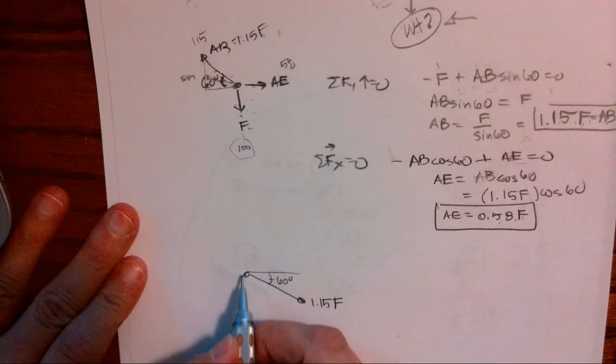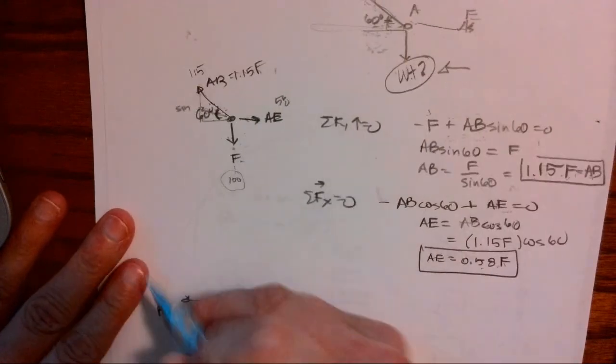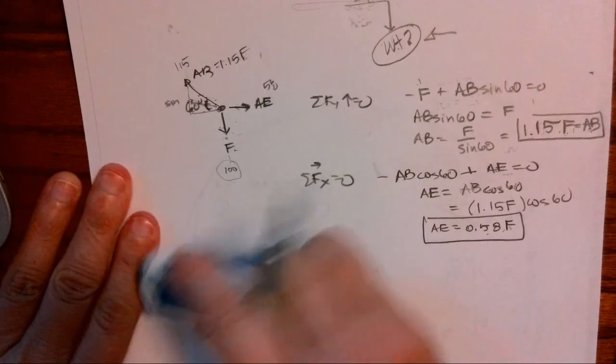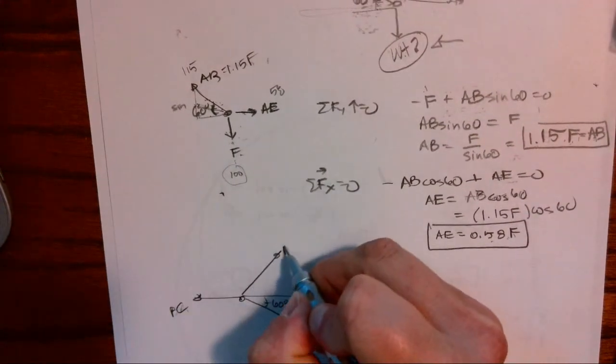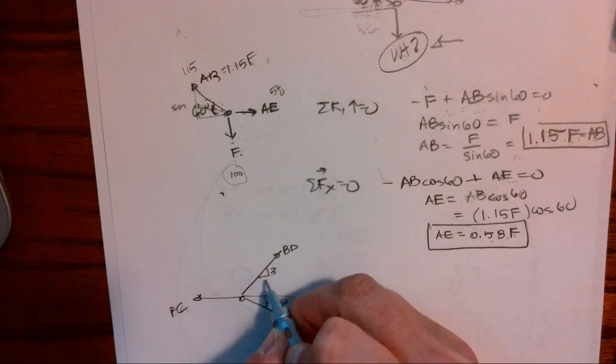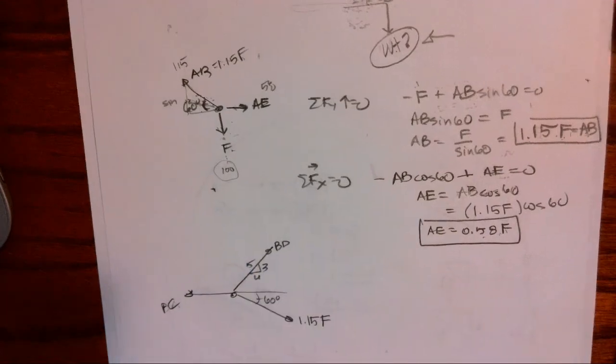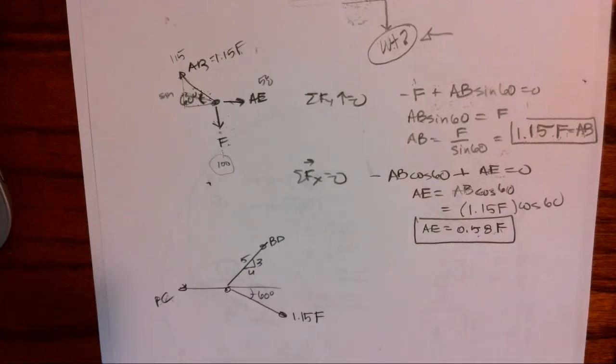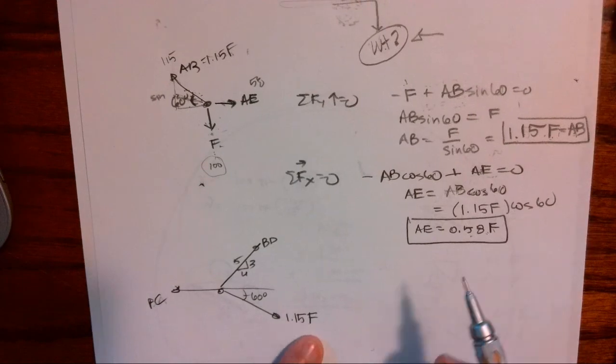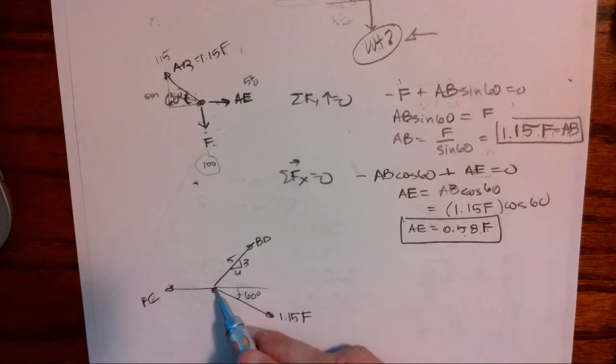Here we have B to A, B to C, and then we have B to D, and this is at a 3-4-5. Okay, and we know that A to B is 1.15 F times F. So now we're going to go through and, okay, X and Y, just X, so let's sum forces in the Y direction.